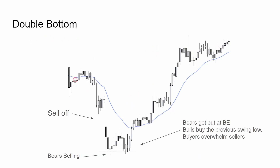Double bottom example. Here we have a sell-off and the bears are getting trapped selling lows. When the market comes back to their price, the bears are going to buy back their shorts and bulls will buy the previous swing low. This creates more buyers and the market will move higher for a few legs.